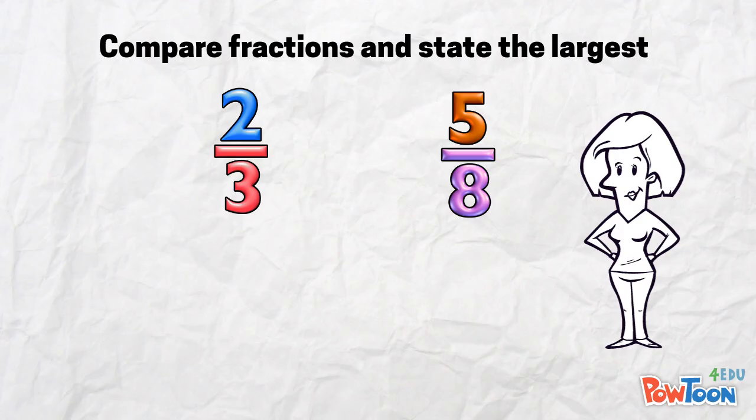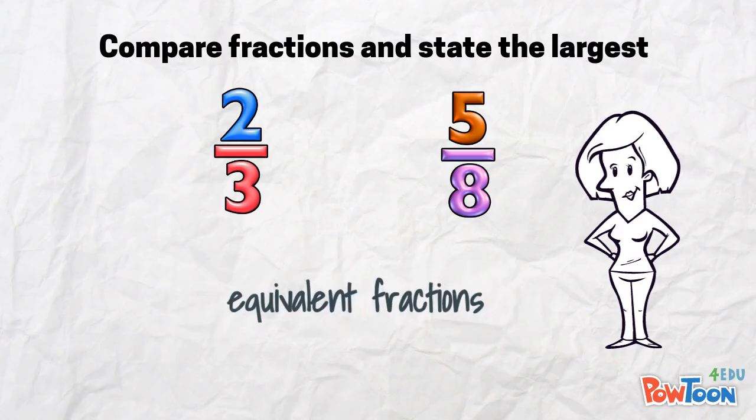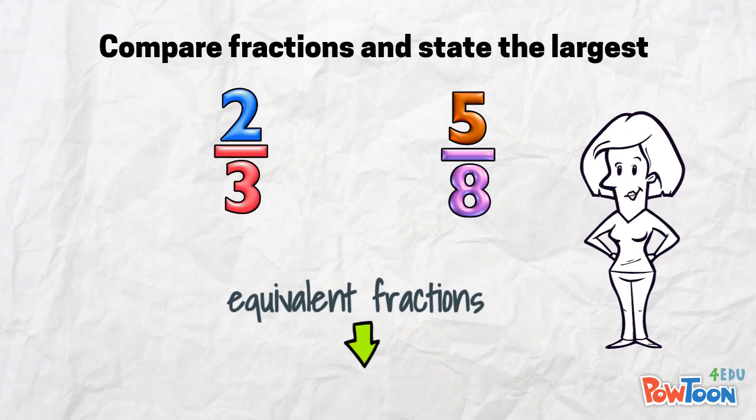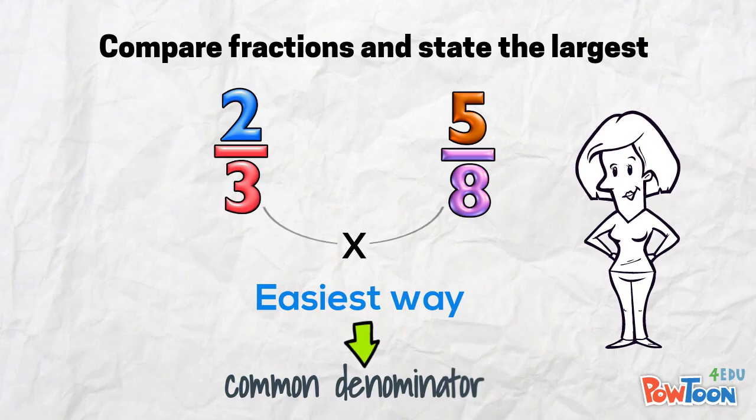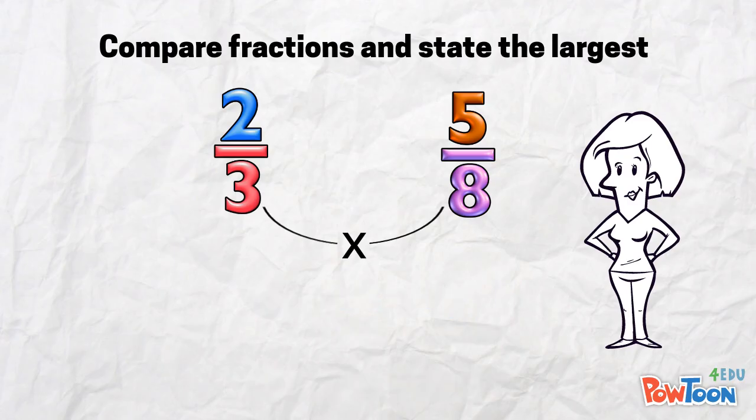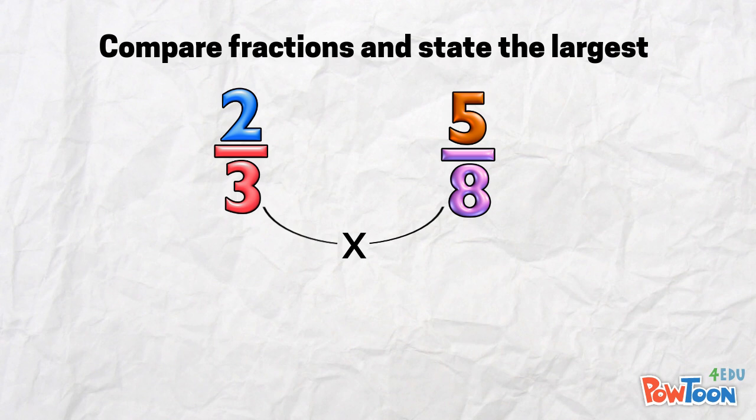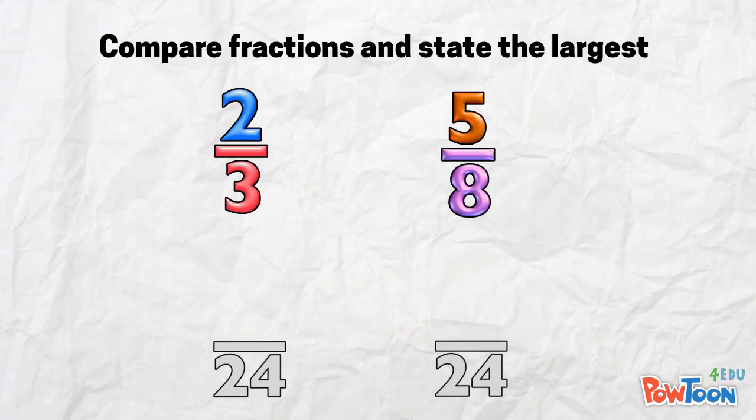So far, our quickest way has been to make equivalent fractions. To do this, we need a common denominator. The easiest way to make a common denominator is by multiplying the two denominators together, whatever they are. 3 times 8 is 24.